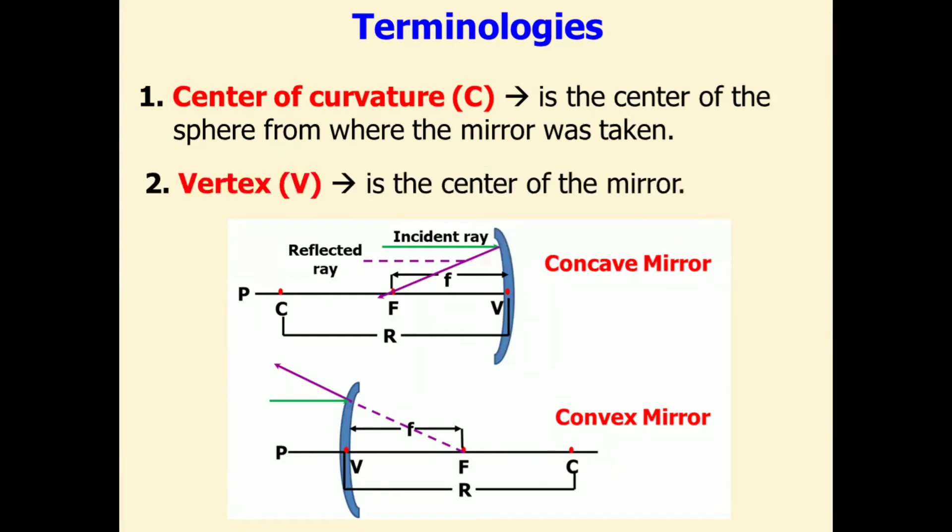The second is the vertex, which is represented by capital V. It is the center of the mirror. And as we draw the ray diagram, we will label it here.